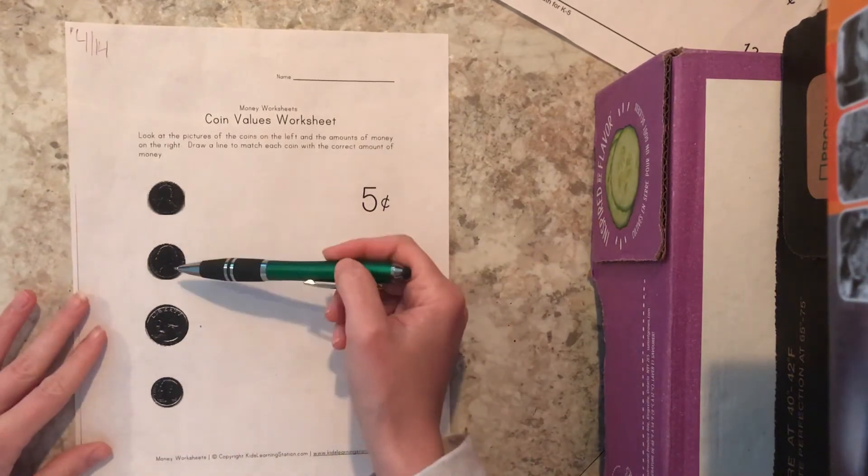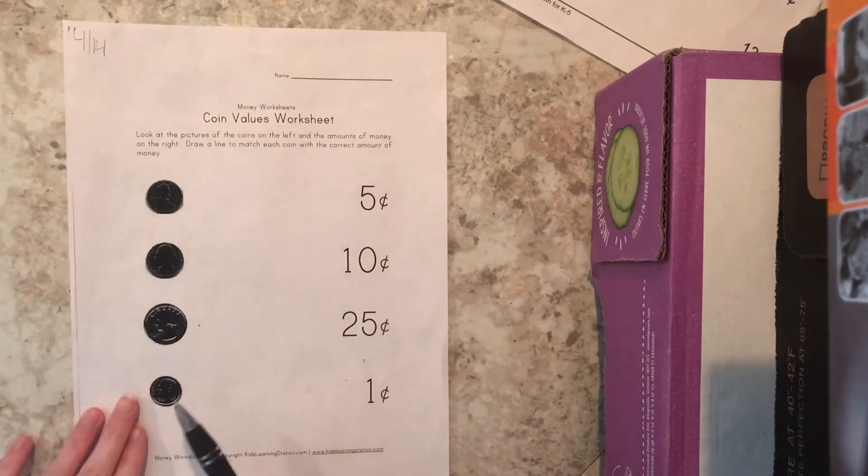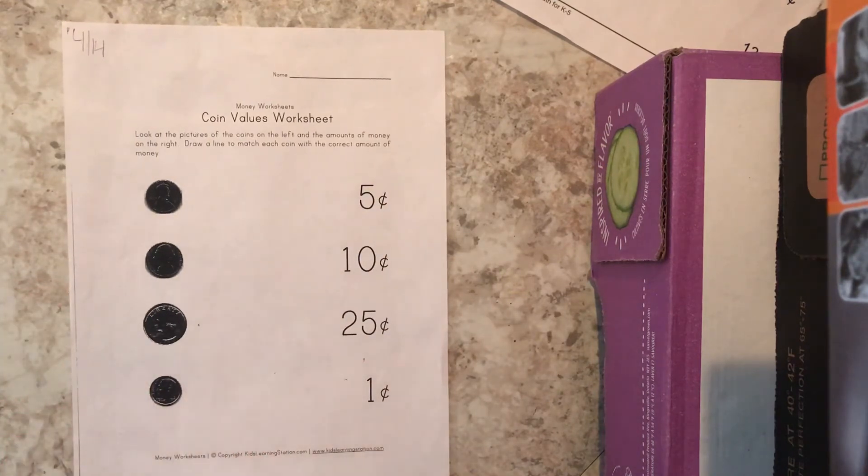Because these coins on the worksheet, the printer when we printed them off made them very very dark, so this is gonna be a little bit challenging. It is okay to ask your parents or your brothers and your sisters for help.